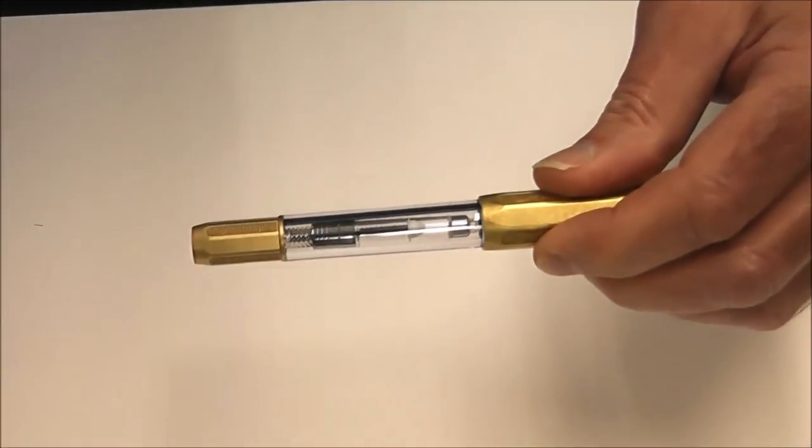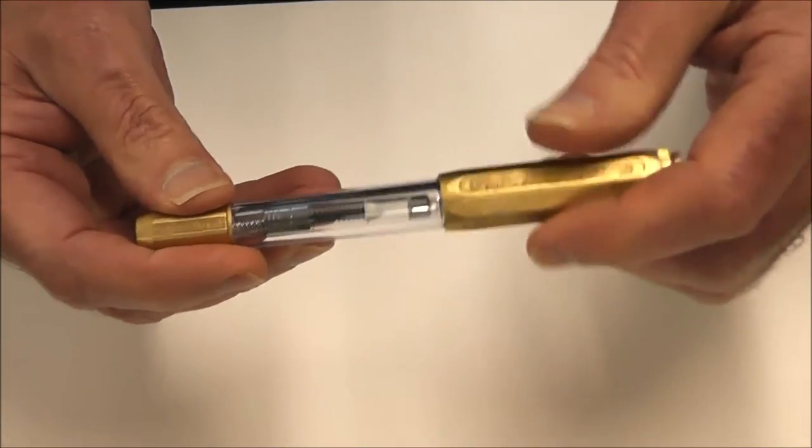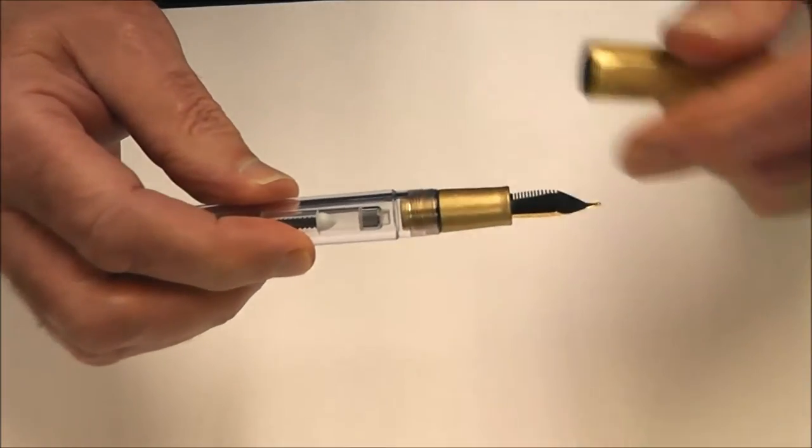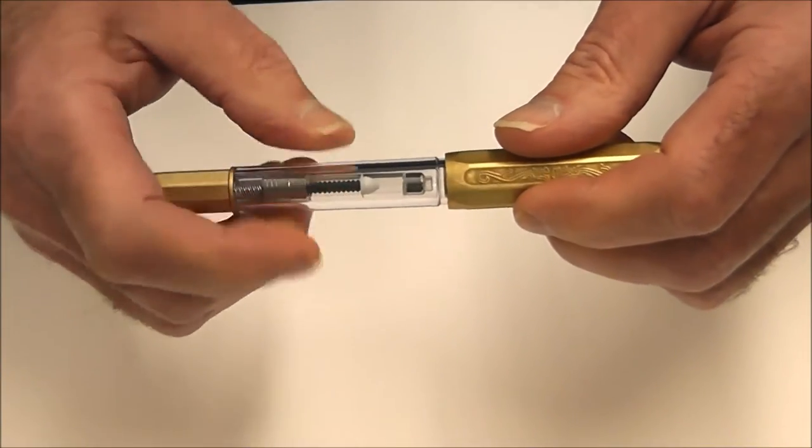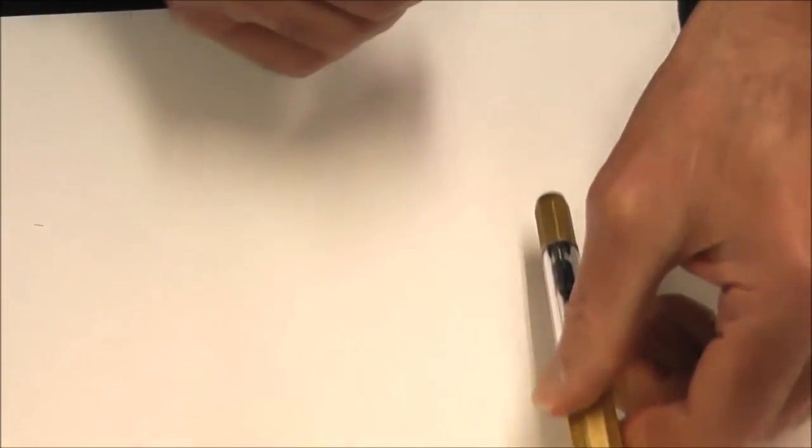Now the first thing you notice about the pen is that it is quite heavy. And that's because the cap, the knob and the section are all made out of solid brass, which is rather nice. In terms of size, let's do a quick comparison.